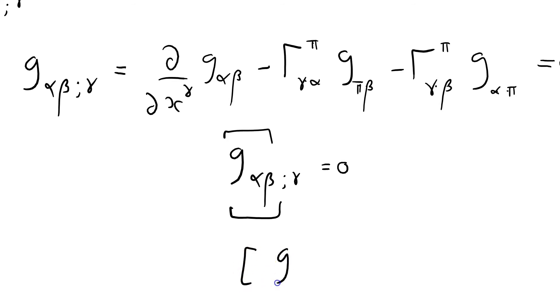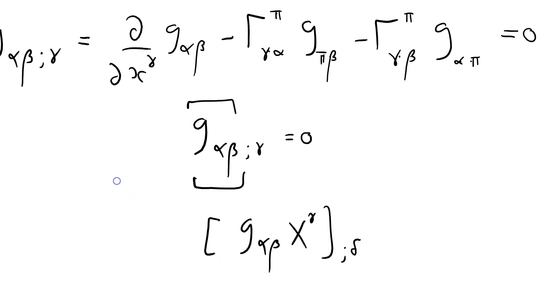So watch. If I want to do, if I've got something G alpha beta times some other tensor X gamma semicolon delta I guess. Well look. I can just say that's just G alpha beta X gamma semicolon delta. Because the differential of that is zero. So it just commutes past differentiation. That is the most useful thing you've ever seen in your life. That's absolutely fantastic.